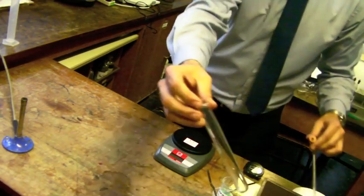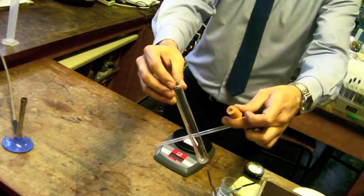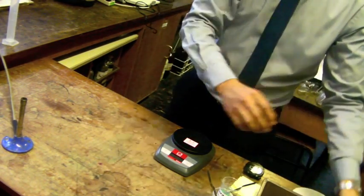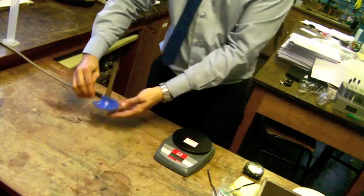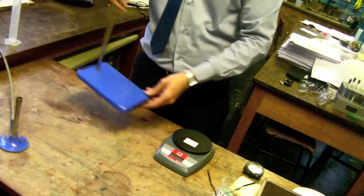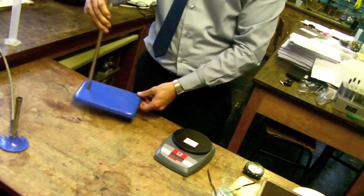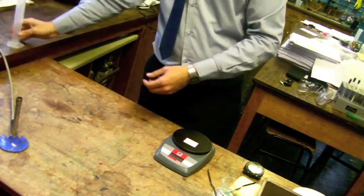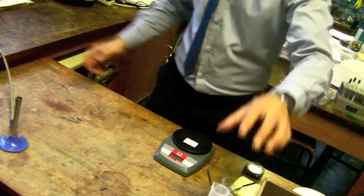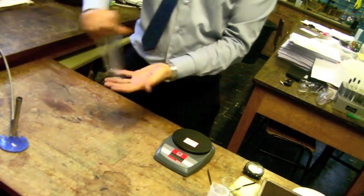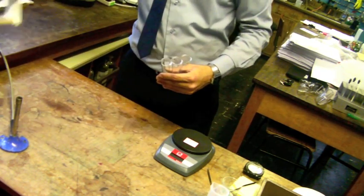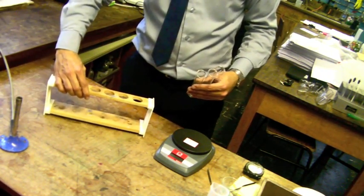You will need a test tube with a bung and delivery tube, a standard issue high school Bunsen burner, a clamp and stand and a measuring cylinder. You will also need three boiling tubes and a boiling tube rack.